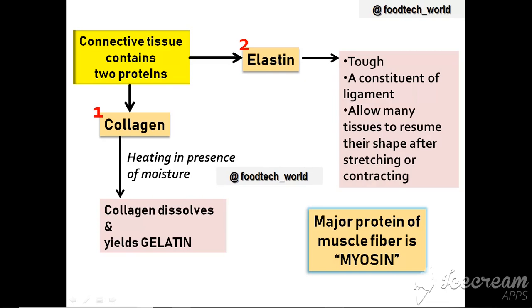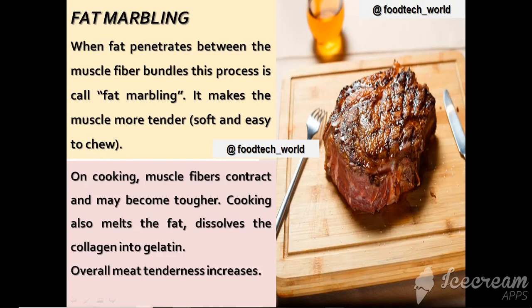The major protein present in muscle fiber is myosin. Regarding fat marbling: when an animal is fed, fat penetrates the muscle fiber bundles — this penetration is known as fat marbling. This process makes the muscle more tender, meaning the muscles become soft and easy to chew. On cooking, muscle fibers contract and become tougher, but the cooking process results in dissolution of collagen and production of gelatin, which overall increases the tenderness of the meat.